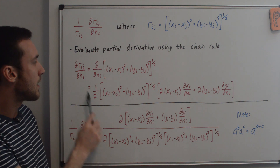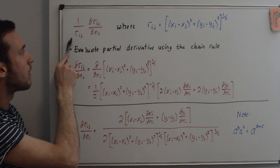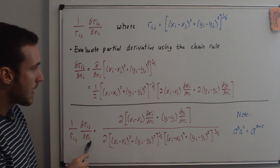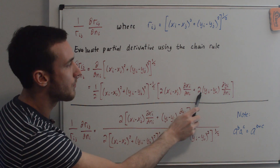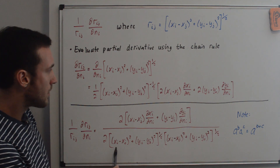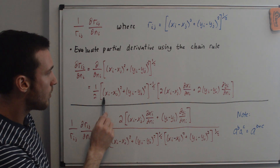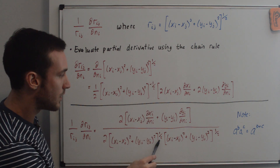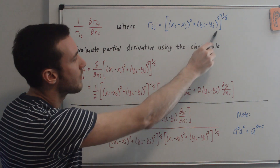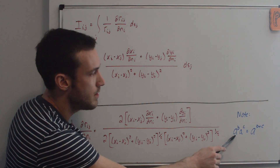Now that we've solved for dr_ij/dn_i, we can substitute it into the expression. We need (1/r_ij) times (dr_ij/dn_i). I've factored out 2 from both terms in the numerator, and the denominator has a factor of 2 from the 1/2 power. Since the exponent is negative 1/2, we bring it down into the denominator as a positive 1/2, and we also have 1/r_ij there.